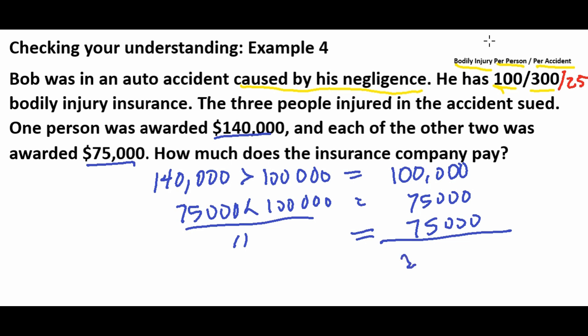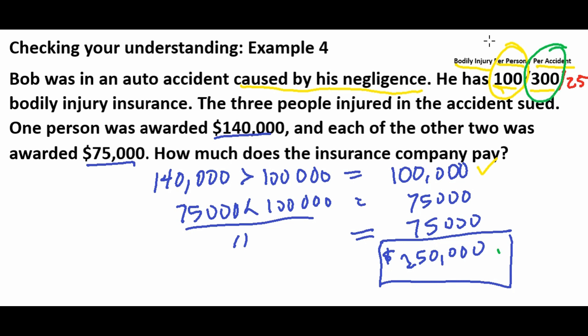The total payout of $250,000 is still under the $300,000 per-accident limit, so the insurance company pays $250,000. The remaining $40,000 - the gap between the $140,000 awarded and the $100,000 per-person cap - Bob must pay out of pocket. Make sure you understand your coverage limits, especially if you own houses, businesses, or other properties.